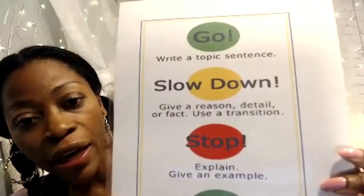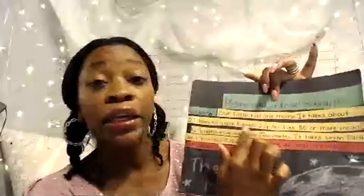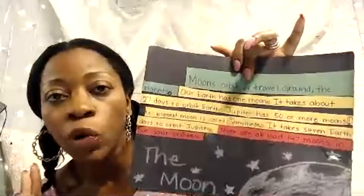Write down 'Moon orbits/travels around the planet.' Now you're going to slow down and think: what details am I going to use that support this topic sentence? It says give a reason, detail, or fact. Use transition words — you don't have to, depending on grade level. I'm working with a third grader who is a reluctant writer, so I'll have different expectations than for my oldest, who would have written four sentences already.